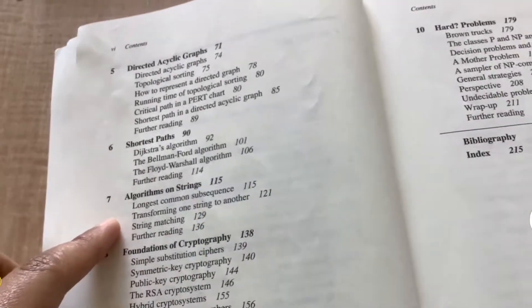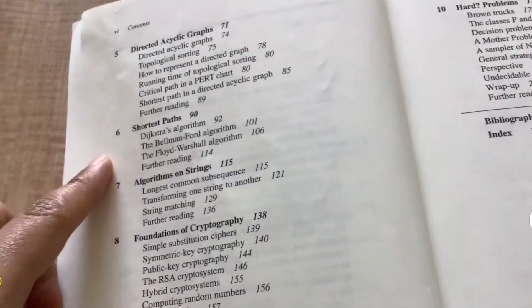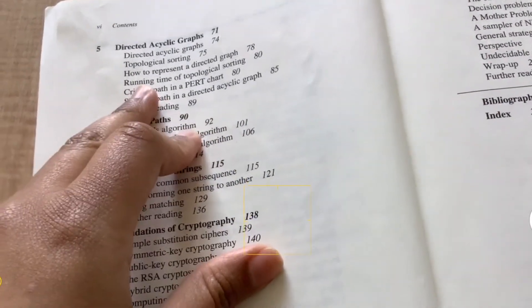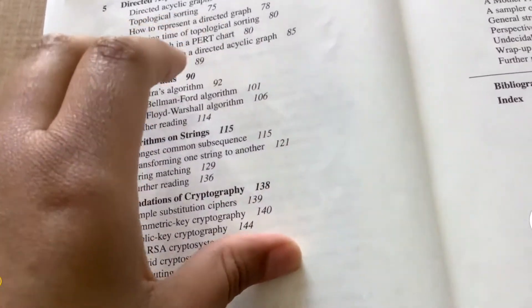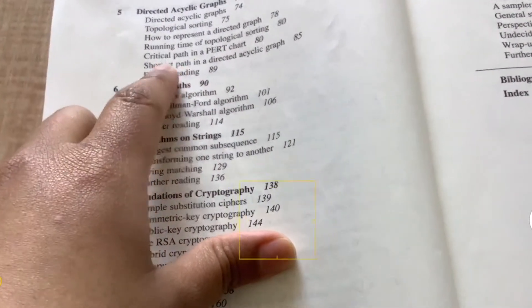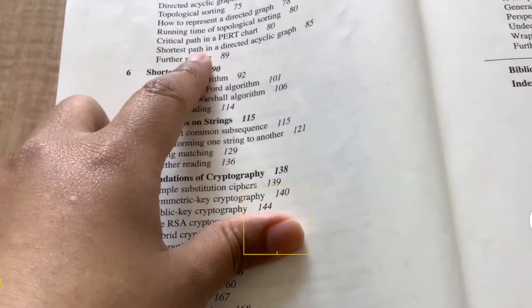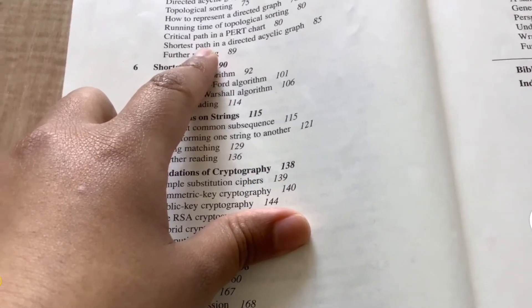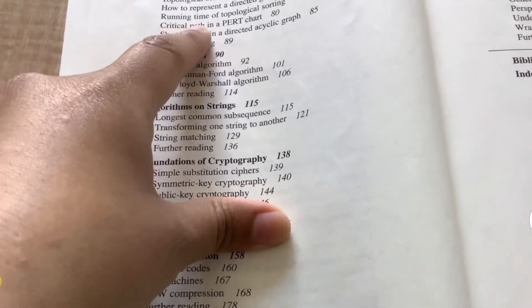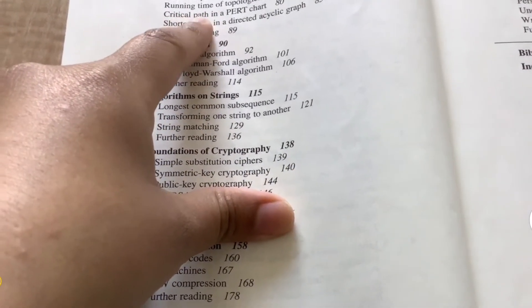And then after that, the book covers graph algorithms. And so directed acyclic graph, the usual topics for graph, which is topological sort, and then the running time of topological sort. So that's kind of the first algorithm for graphs that the book describes. There's this section about the critical path in a PERT chart, which that wasn't ideal, like the explanation wasn't clear, how it's related wasn't clear. So I, yeah, this section was bad for me, I think.